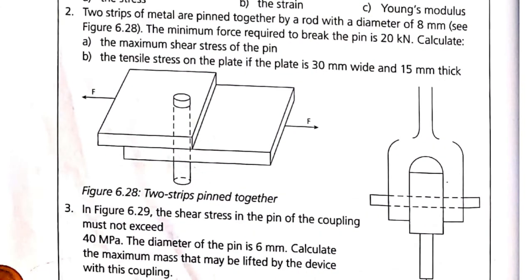Two strips of metal are pinned together by a rod with a diameter of 8 millimeters, see figure 6.28. The minimum force required to break the pin is 20 kilonewtons.